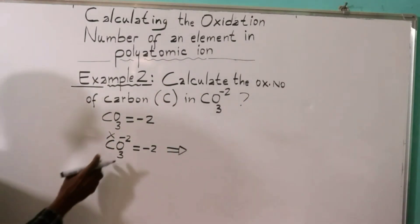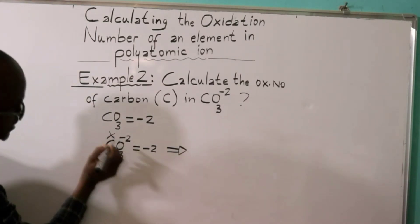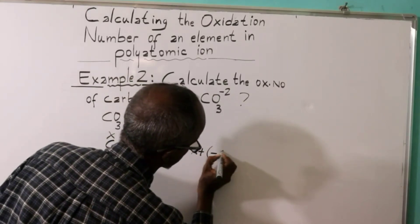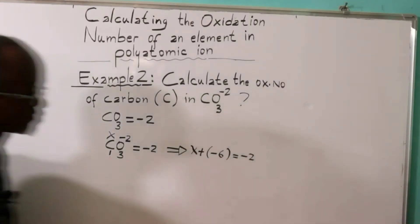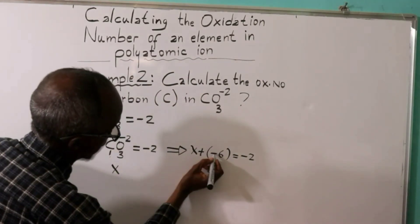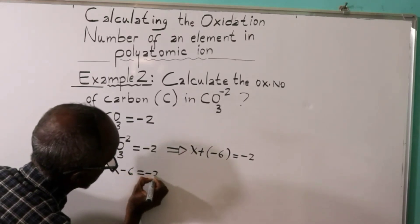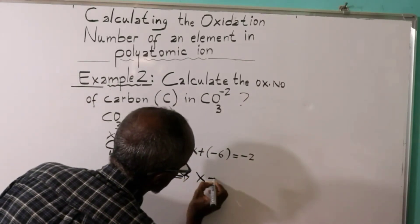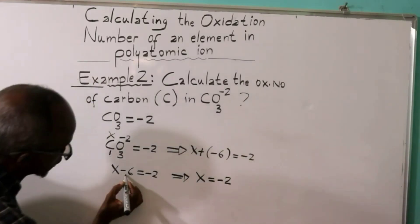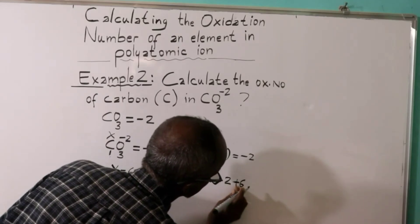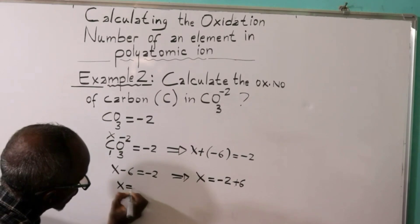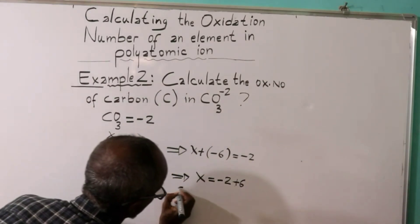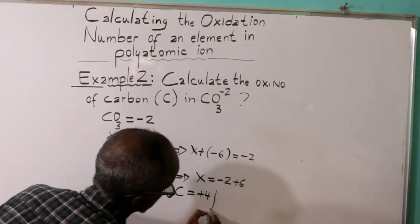X plus minus six is equal minus two. Cancel the minus six. X is equal to minus two minus minus six, which gives plus four. The oxidation number of carbon is plus four.